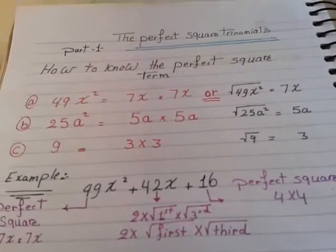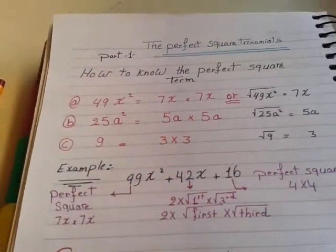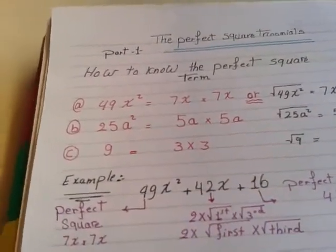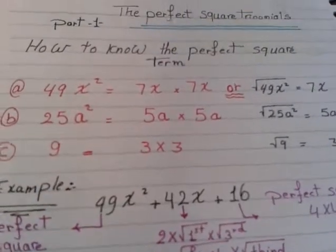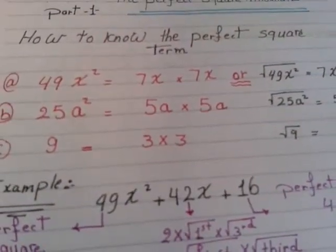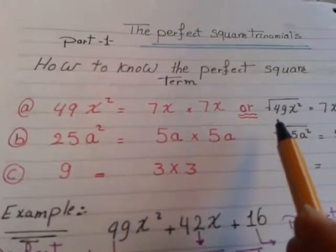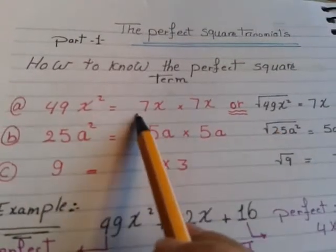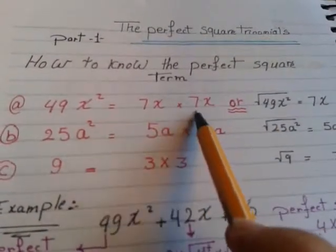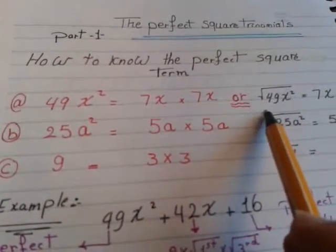Let's remember together the word perfect square. Perfect square means this number or this term has two clear factors multiplied by each other gives me the factor. For example, 49x². If we are going to make a root for 49x², root for 49 is 7 because 7 multiplied by 7 equals 49. 7 time itself equals 49.